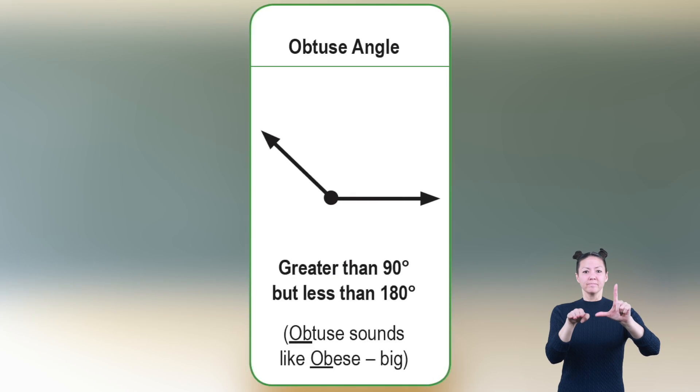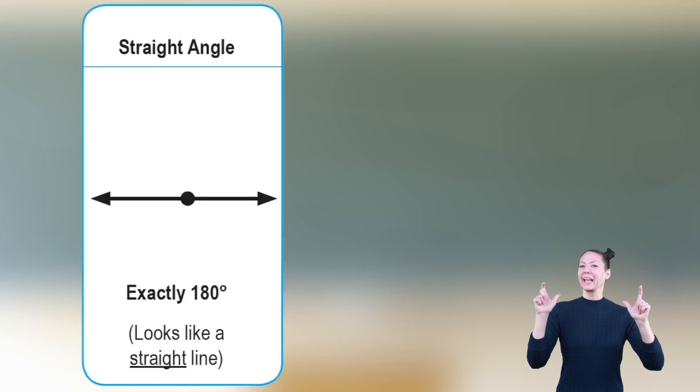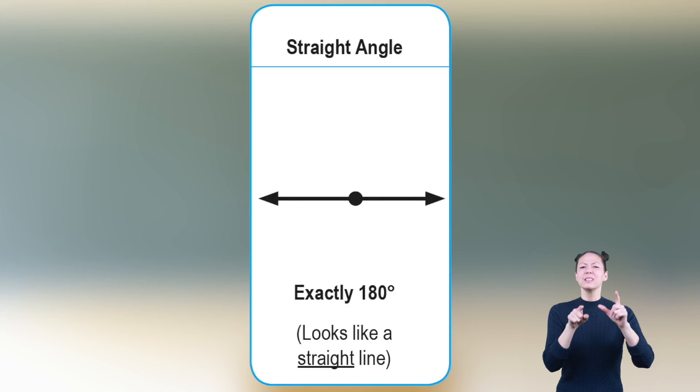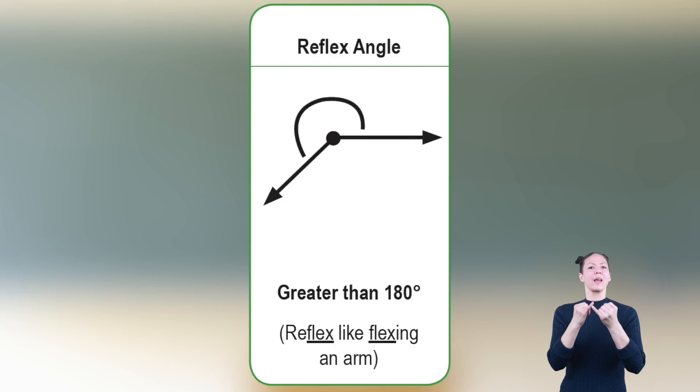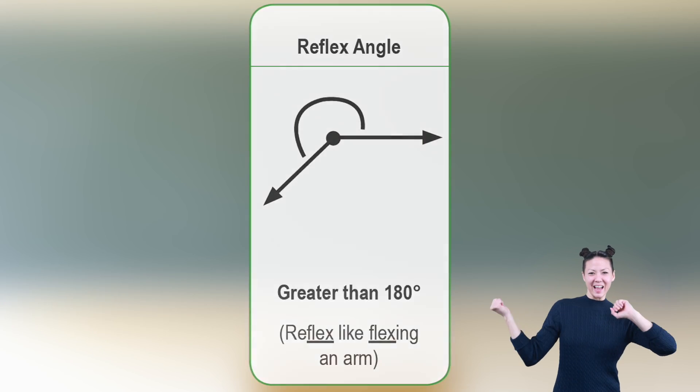An obtuse angle is greater than 90 degrees but less than 180 degrees. Obtuse sounds like obese—big. A straight angle is exactly 180 degrees and looks like a straight line. A reflex angle is greater than 180 degrees—like flexing an arm!